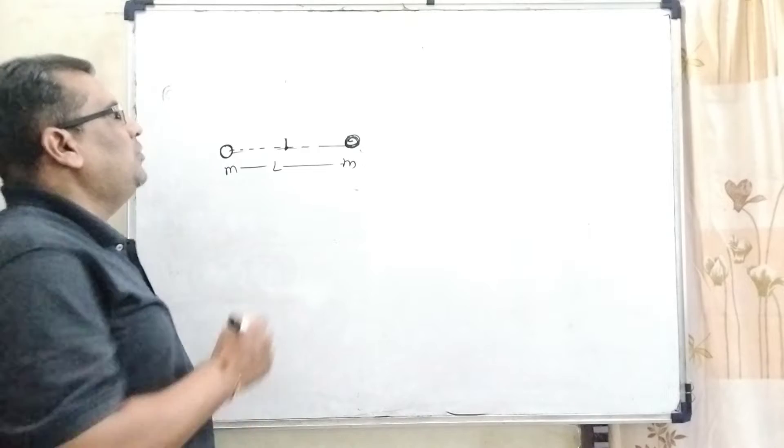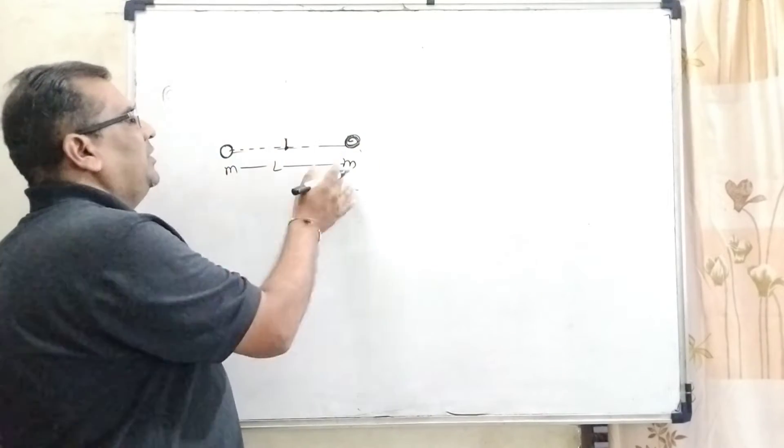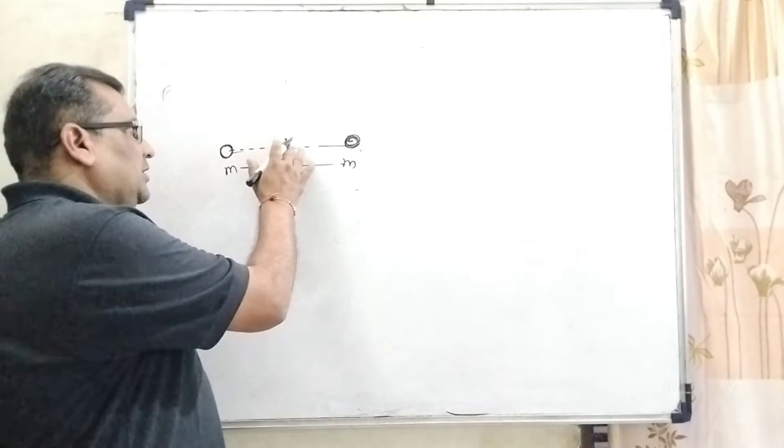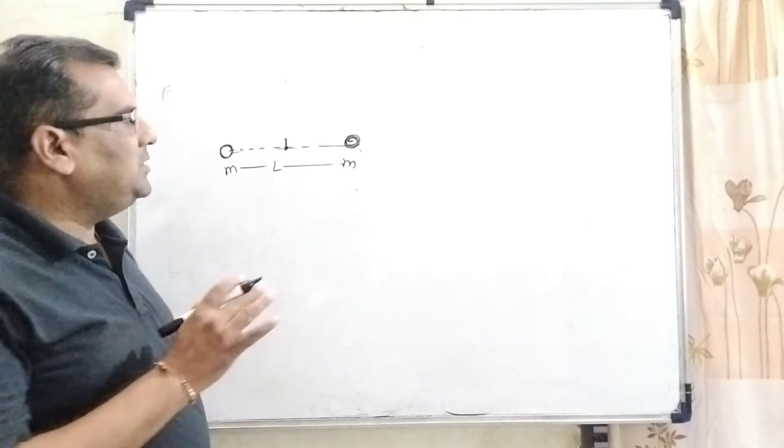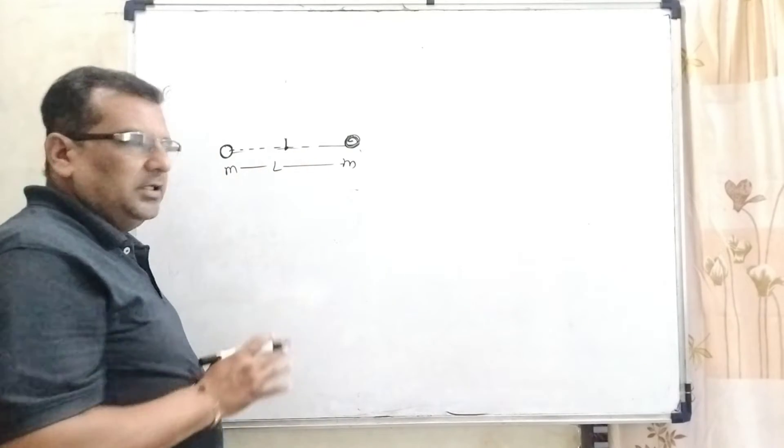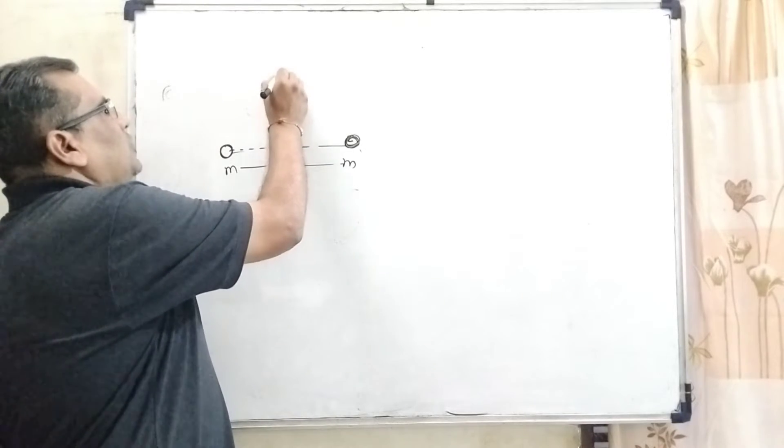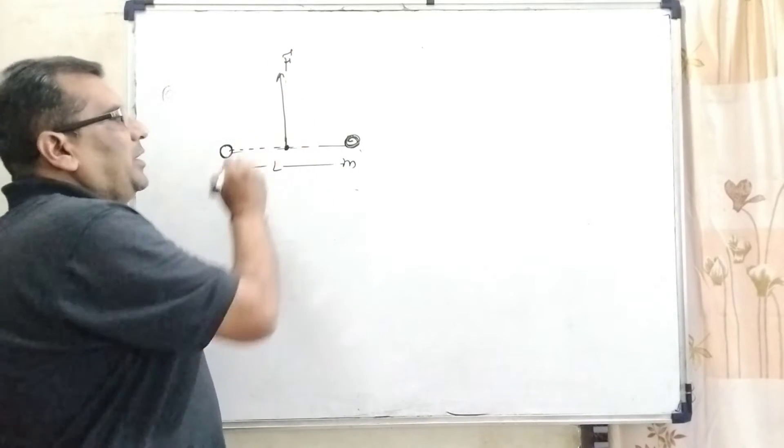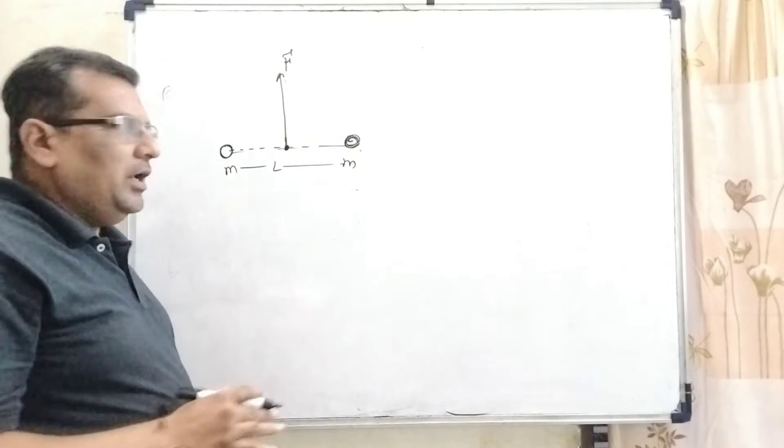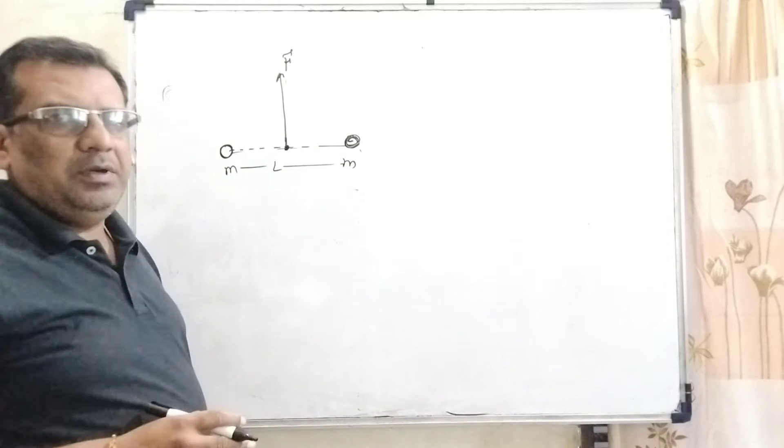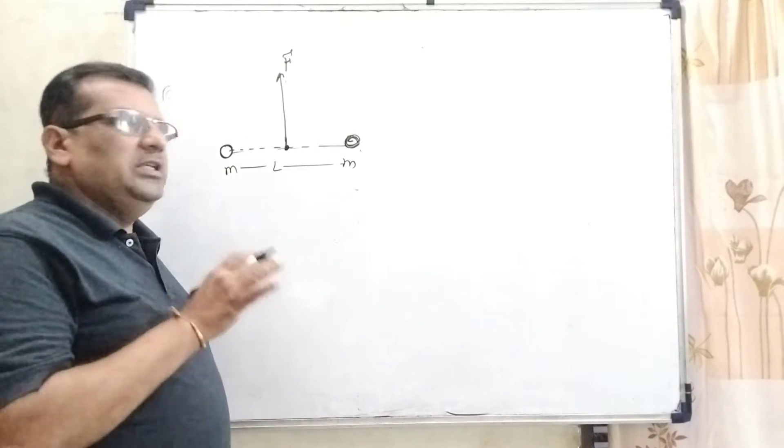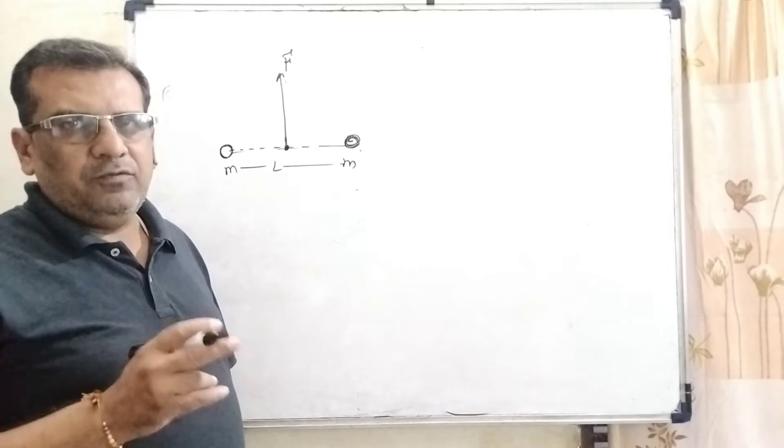In this question, we have two identical point masses with mass M, connected with a light string. It means there is no mass considered. When it is pulled, some force is applied exactly at the midpoint of this string. This whole system is kept on the table. It means very simple, there is no gravitational force applied. It is frictionless.